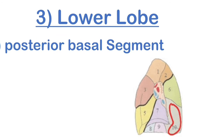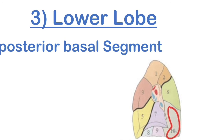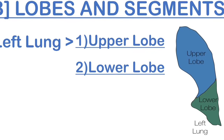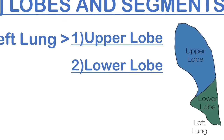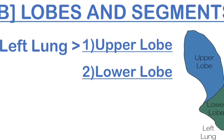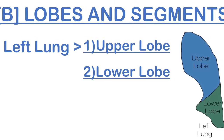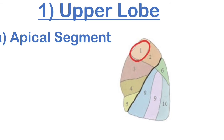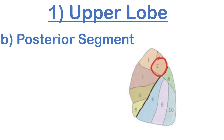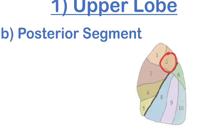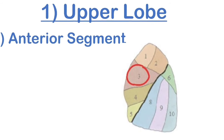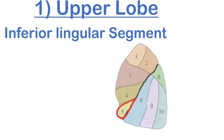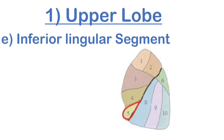The last segment is the posterior basal segment of the lower lobe. Those were all the lobes of the right lung. Now let's discuss the lobes and segments of the left lung. The difference between right and left lung is the number of lobes — the right lung has three lobes, while the left lung has two lobes: the upper lobe and the lower lobe. In the upper lobe: the apical segment, the posterior segment, the anterior segment, the superior lingual segment, and the inferior lingual segment.